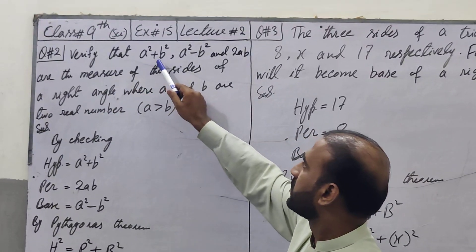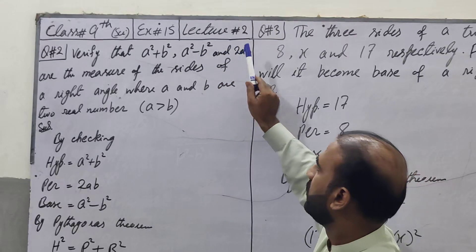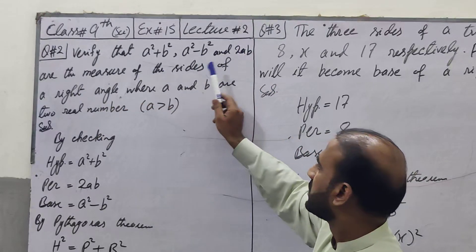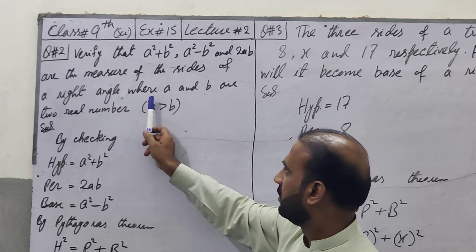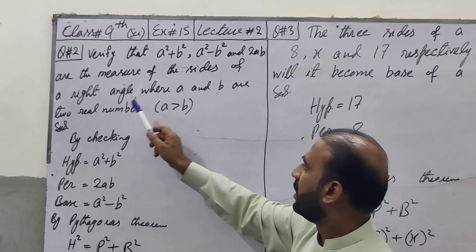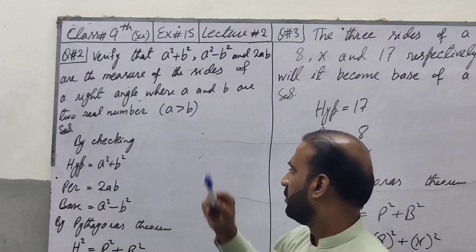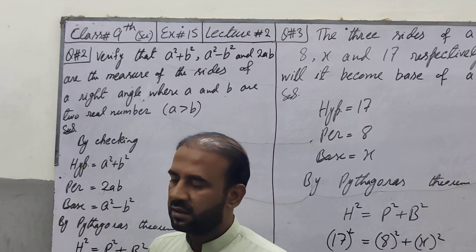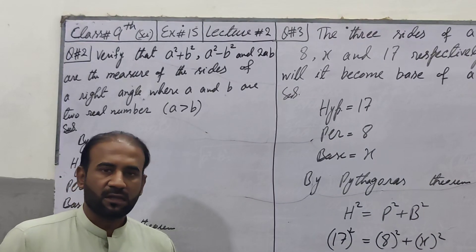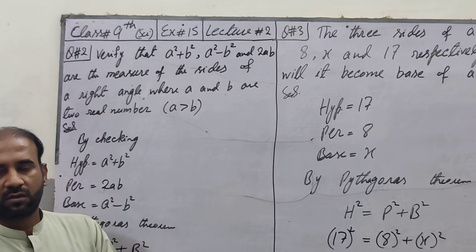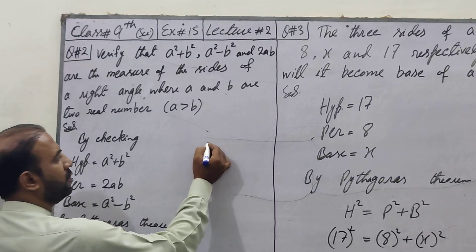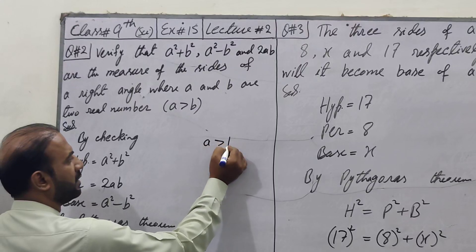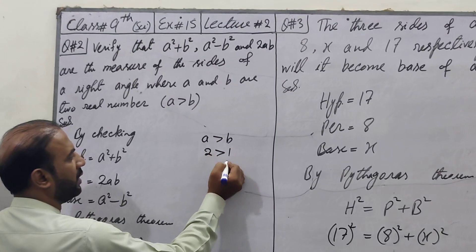Verify that A²+B², A²-B², and 2AB are the lengths of the sides of a right angle triangle where A and B are two real numbers with A greater than B. Now check the method. If you have the values, let's say these numbers. So we have A greater than B, so we have A greater than 1.